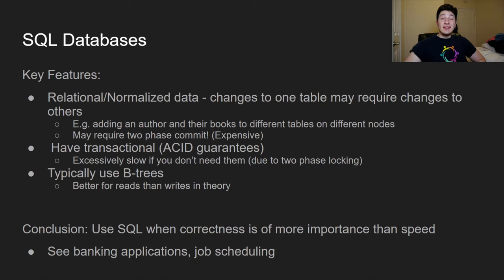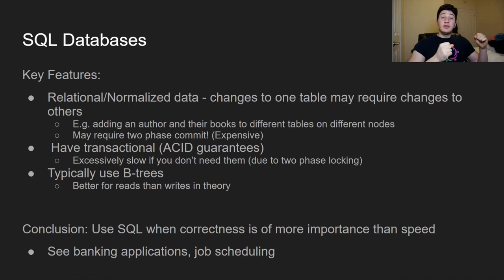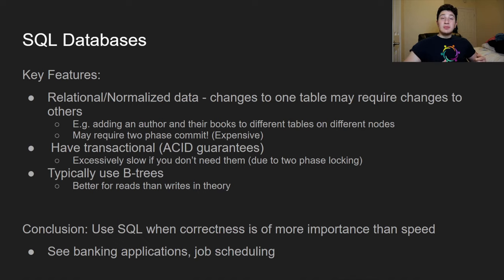SQL databases also provide ACID guarantees, meaning transactions are implemented such that every transaction acts as if it were serializable — you don't have to worry about race conditions, and a transaction either fully succeeds or fully fails. SQL databases also use B-trees, which are better for reading but worse for writing. Additionally, transactions can slow down the entire database because most SQL databases use an expensive two-phase locking scheme to ensure data correctness.